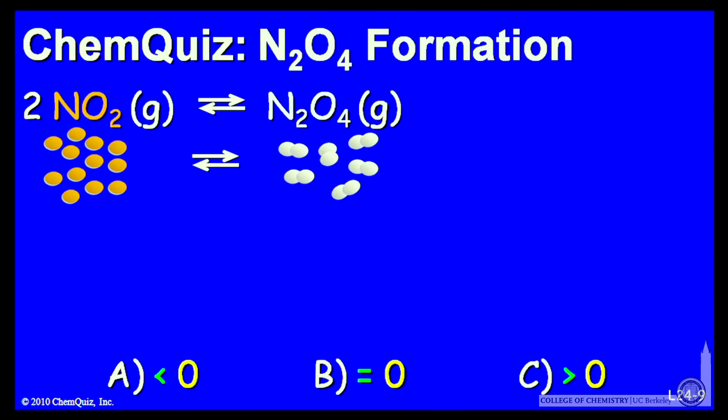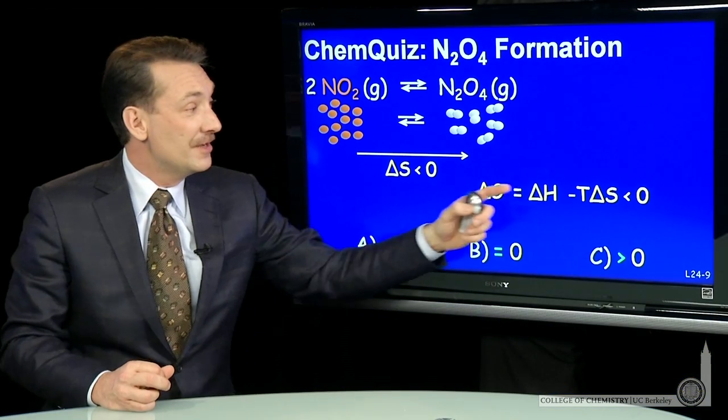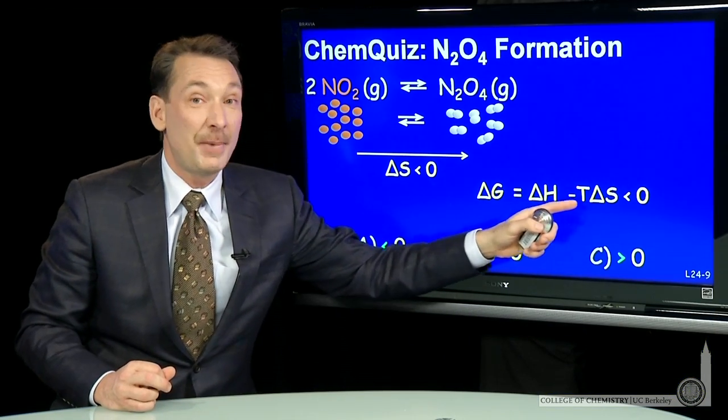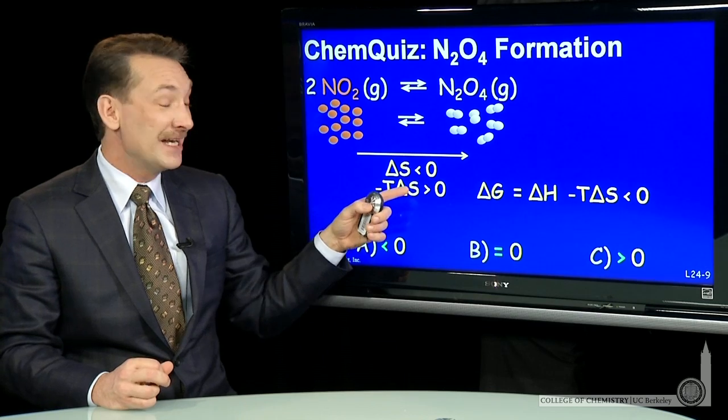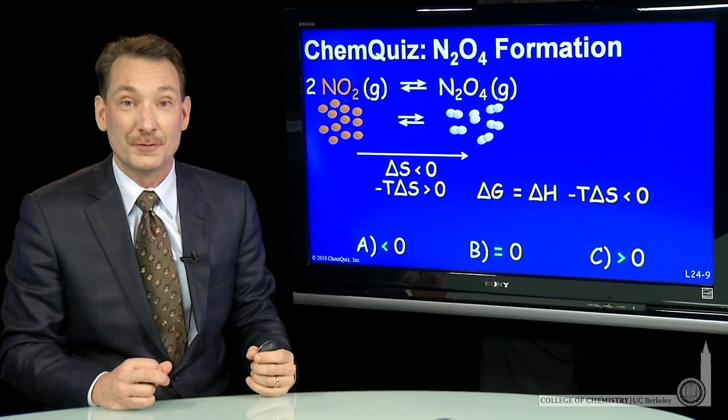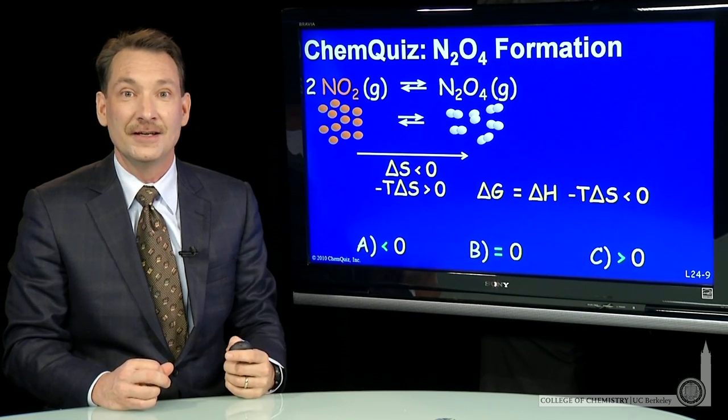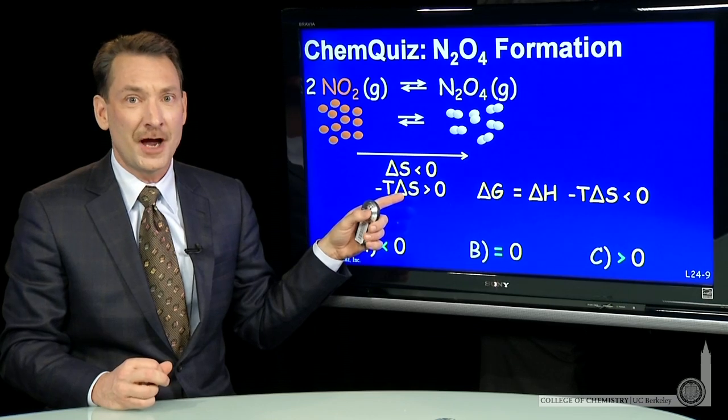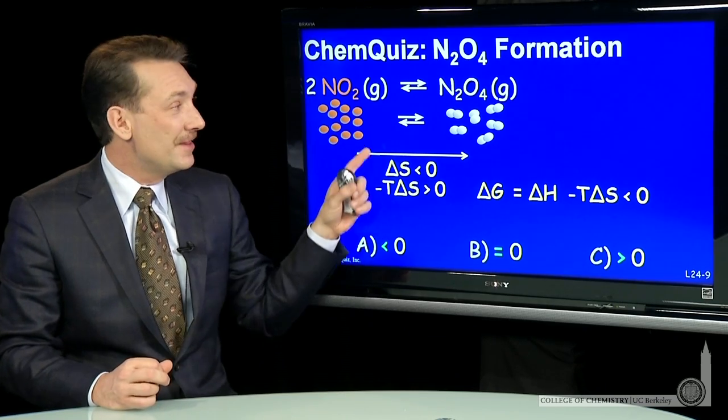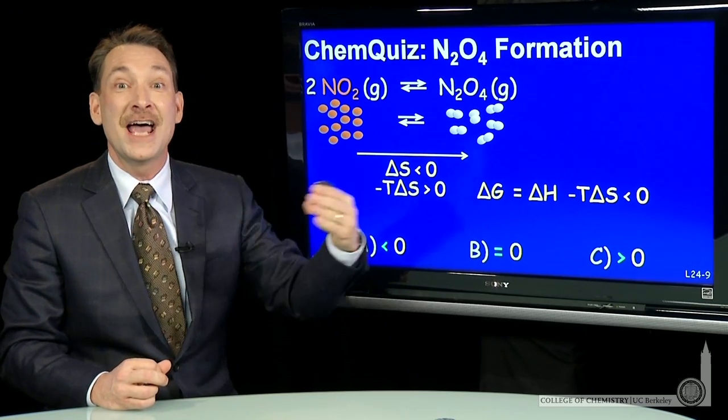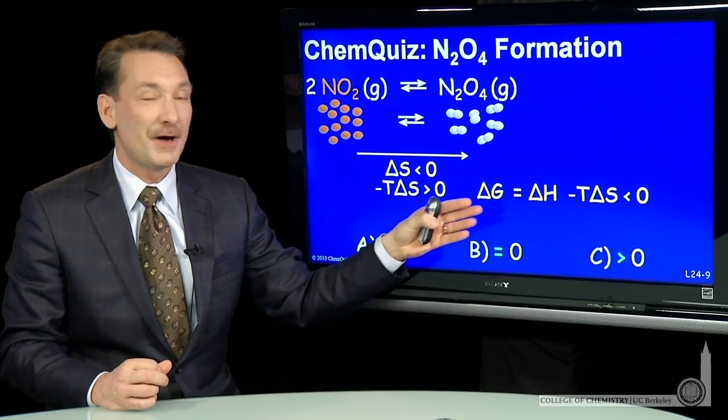So a decrease in entropy means what effect on delta G? Well, a decrease in entropy—delta S is negative, less than 0—so that means this is a positive contribution. Minus T delta S is a positive contribution to delta G, so this doesn't favor. Entropically, this is not favored. The entropic contribution tends to make delta G positive.